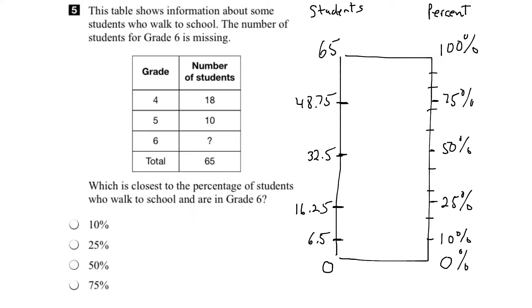So to recap, 10% would be 6.5 students, 25% would be 16.25, 50% would be 32.5, and 75% would be 48.75 students.